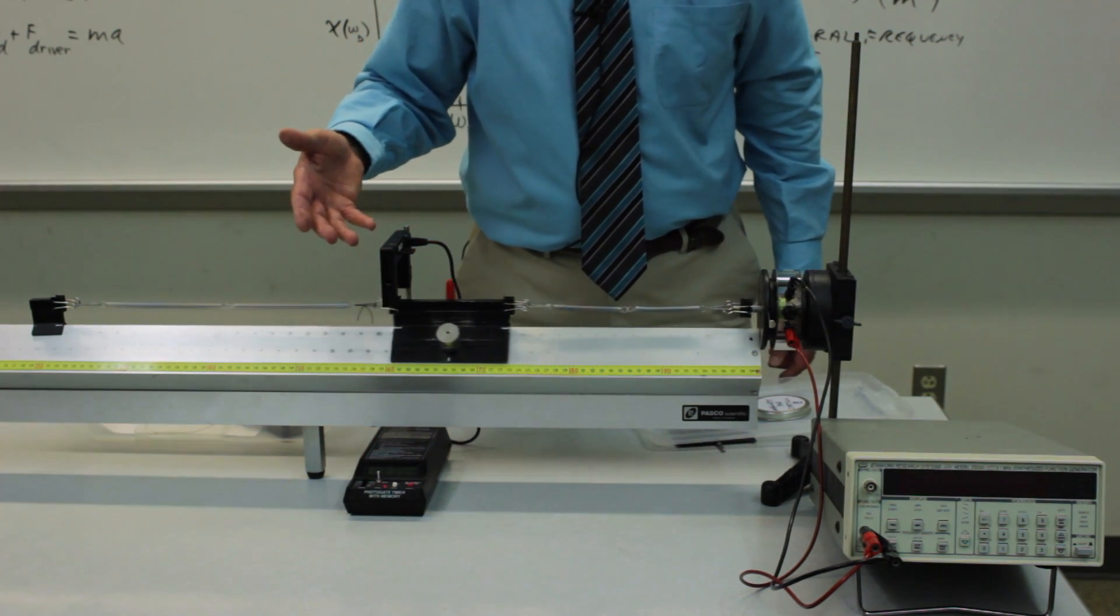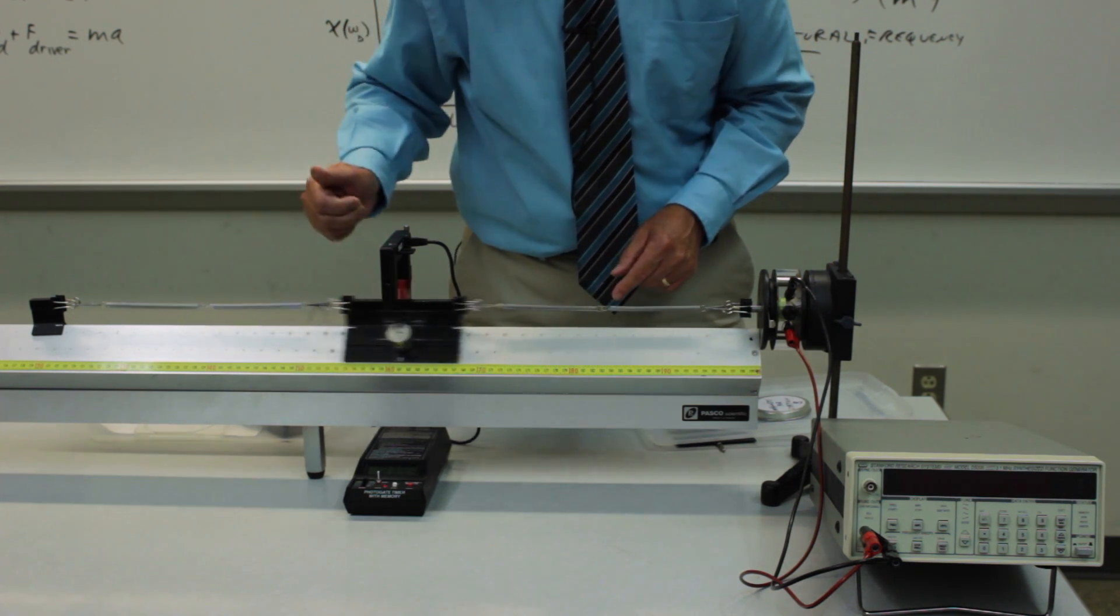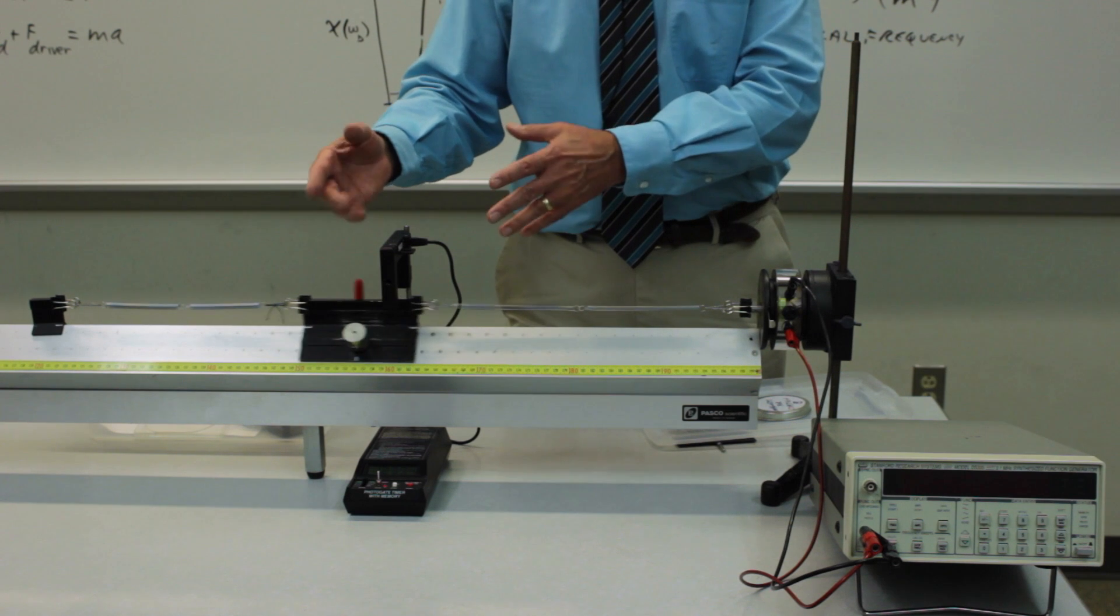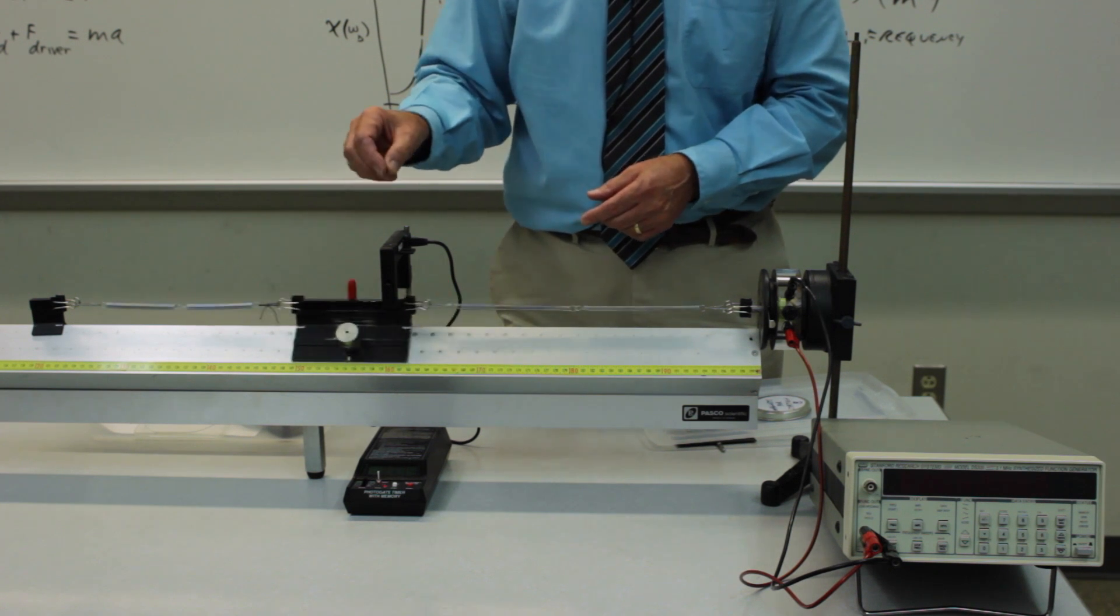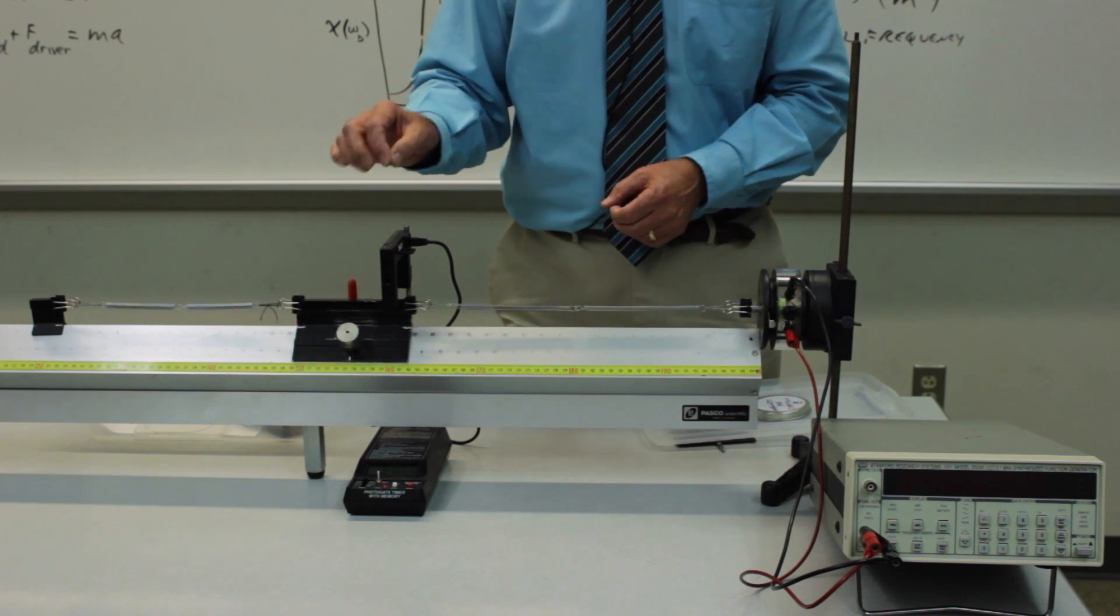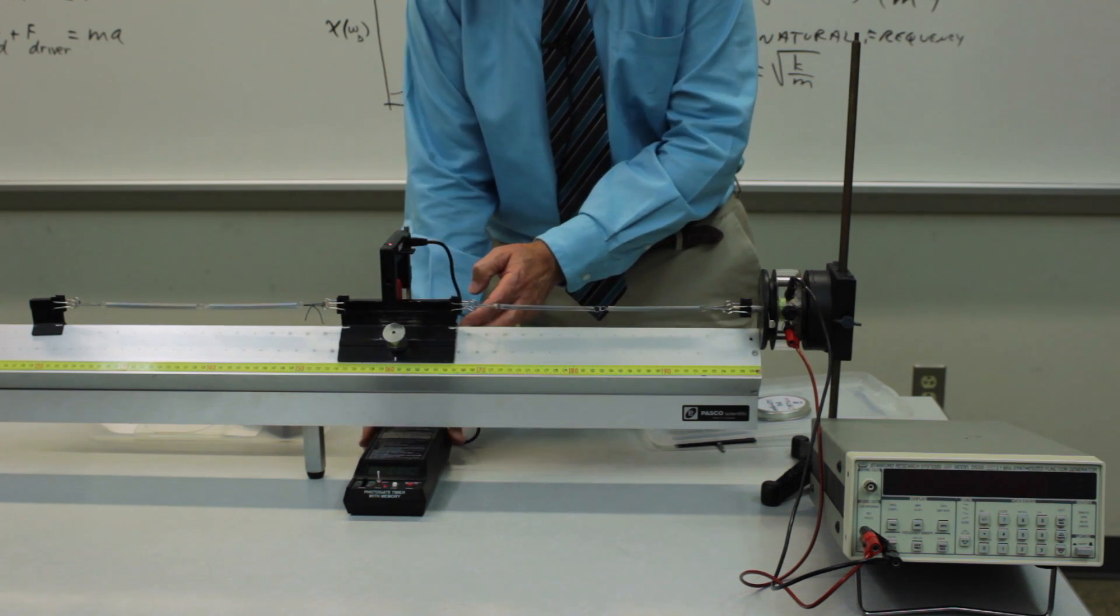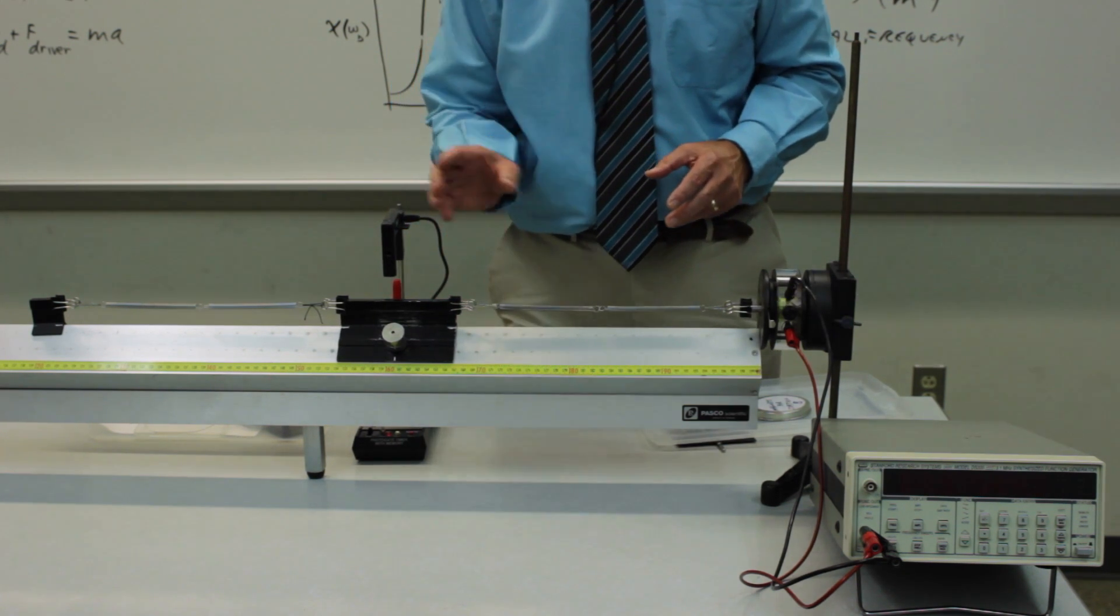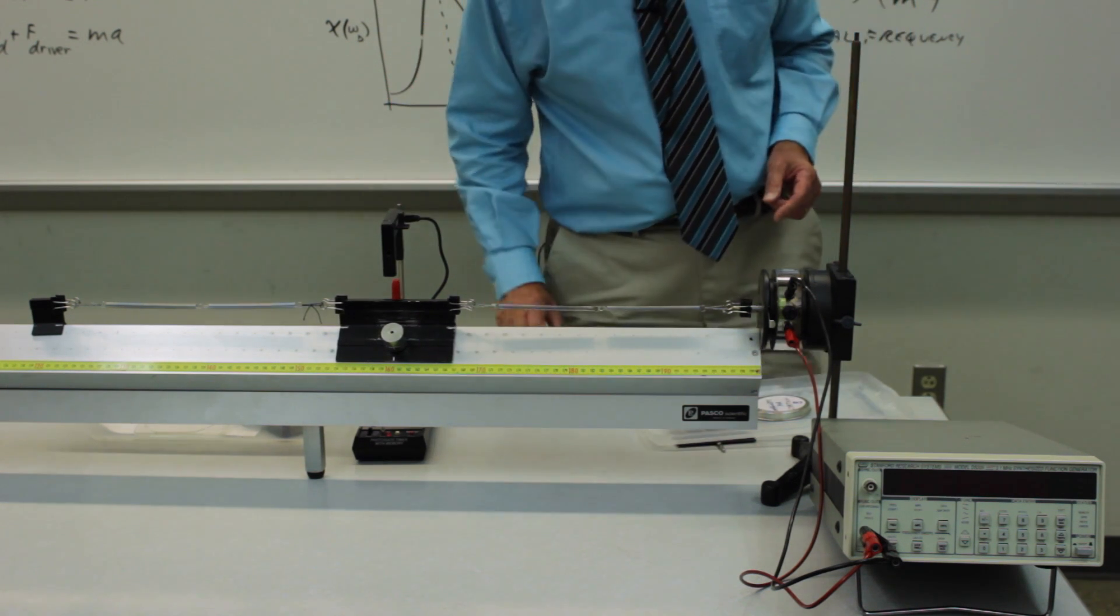We've measured the period of oscillation of the system with the four springs and the four extra masses. This is roughly one and a quarter seconds. So if we do a quick mental calculation, one and a quarter is roughly five quarters. The reciprocal of that is four fifths. So the frequency of oscillation is about 0.8 Hertz. What I'd like to do is to stop the glider and then force the oscillations with this driving system, and I'll tune the frequency to something in the neighborhood of 0.8 Hertz, and we'll see what the response of the system is.